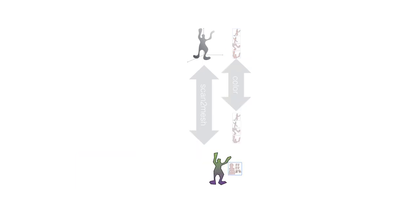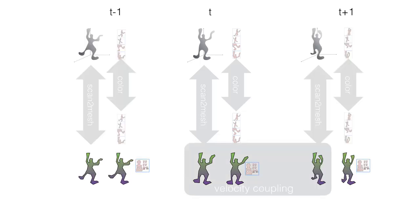We propose the following solution: optimize two sets of vertices per frame — one fitting the images through the photogrammetric error and one fitting the geometry. Since those sets could theoretically deviate from each other, we include a velocity coupling term that encourages constant velocity in this 16-millisecond neighborhood.